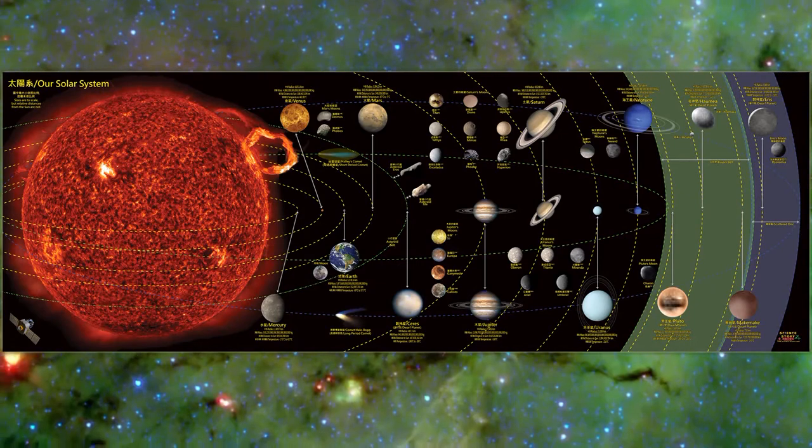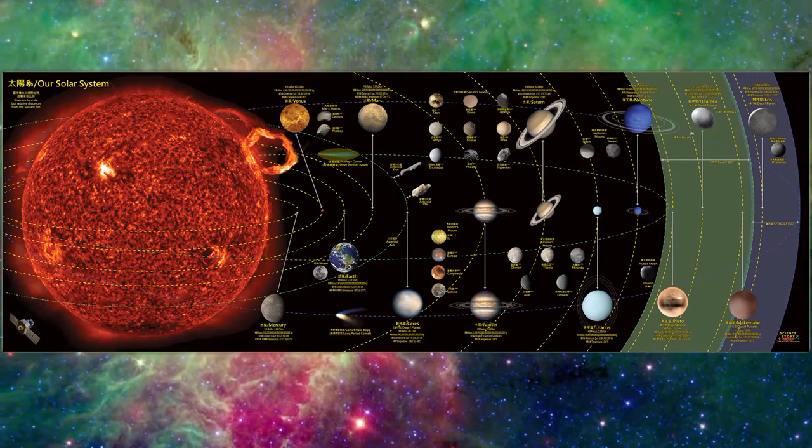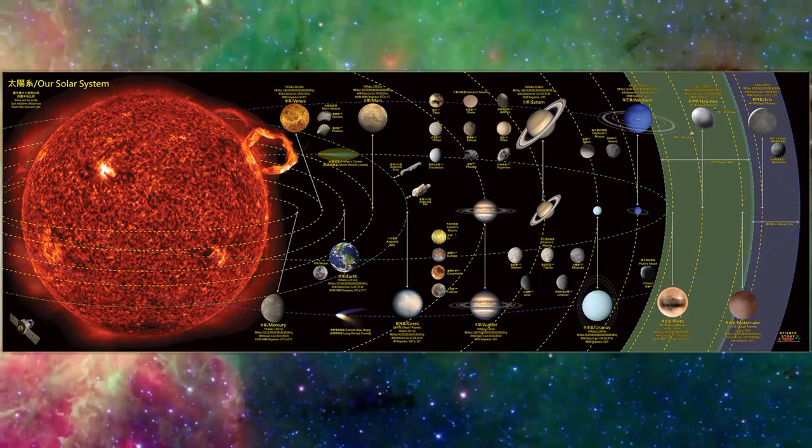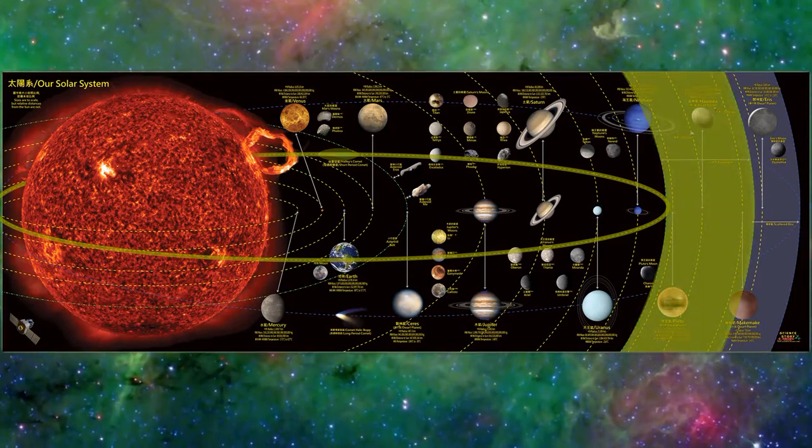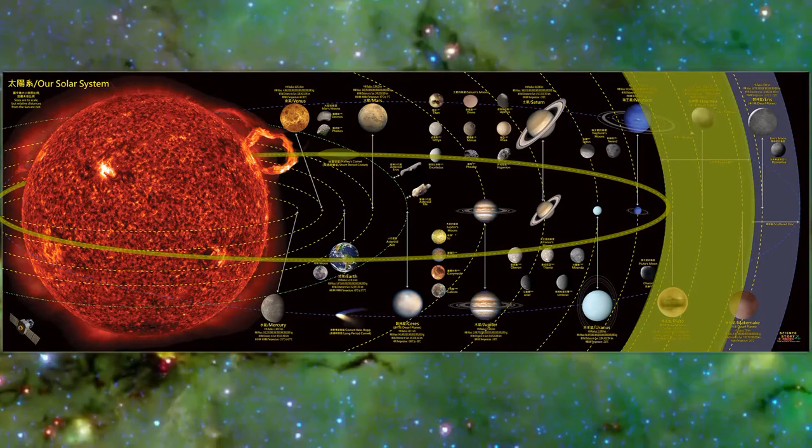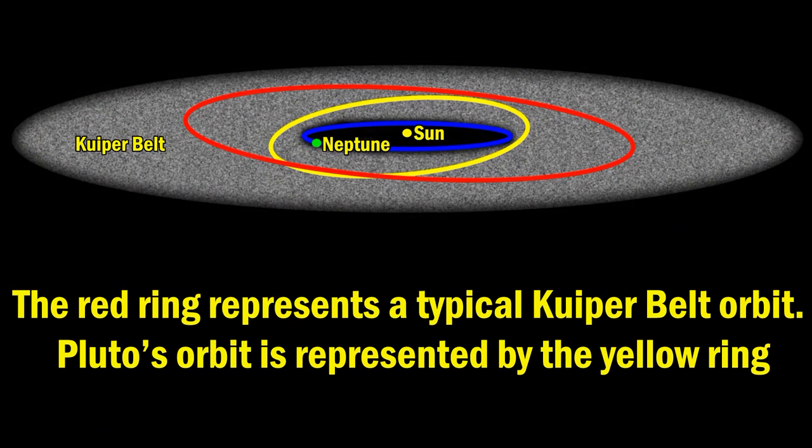Halley's comet is what is called a Short Period Comet. Short Period Comets are comets that orbit the Sun in less than 200 years. Short Period Comets are believed to originate from what is called the Kuiper Belt. The Kuiper Belt is a region of the solar system beyond the planets extending from the orbit of Neptune at 30 AU to approximately 50 AU from the Sun. It is similar to the asteroid belt, although it is far larger, 20 times as wide and 20 to 200 times as massive. Like the asteroid belt, it consists mainly of small bodies. But while the asteroid belt is composed primarily of rock and metal, Kuiper Belt objects are composed largely of frozen material like methane, ammonia, and water.